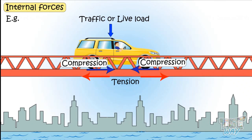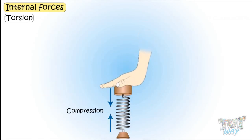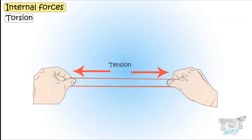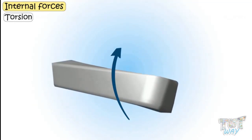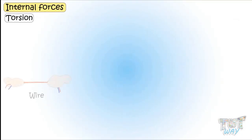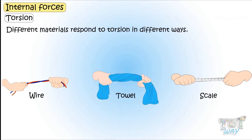Now let's learn another force, and it's torsion. Compressing an object creates compression. Pulling an object from both ends creates tension. When you twist an object, it creates torsion. Different materials respond to torsion in different ways — some may change their shape, or some may even break.